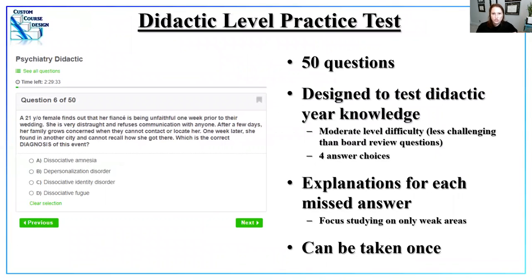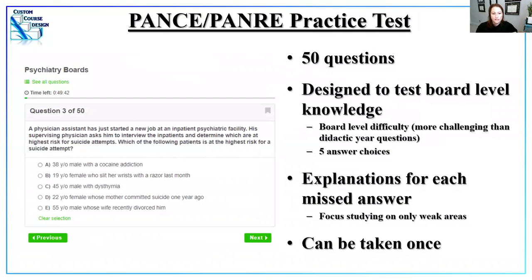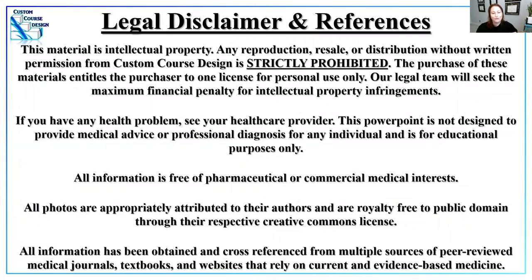Exams are available at two levels: didactic (moderate difficulty, four answer choices, similar to didactic year exams) and board level (higher difficulty with multi-step reasoning, five answer choices). You'll receive an email for anything answered incorrectly to guide further study. Please leave feedback, subscribe to the YouTube channel, and tune in for part two.